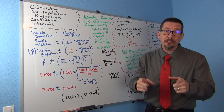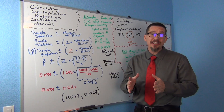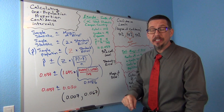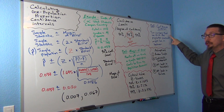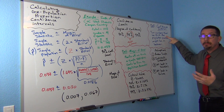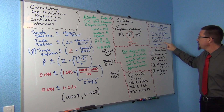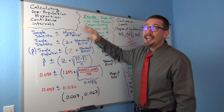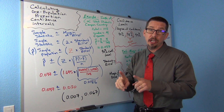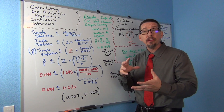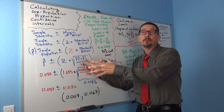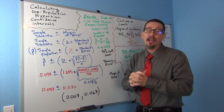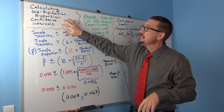Hi everyone, this is Matt Tuchot with Intro Stats. We're going to continue our discussion on how to calculate confidence intervals. Last time we talked about the idea of a confidence interval — two numbers that we think the population parameter might be in between. Today's topic: how to calculate one population proportion confidence intervals. This is really important if you ever try to figure out a population percentage, like the percentage of your customers that will like one of your items.